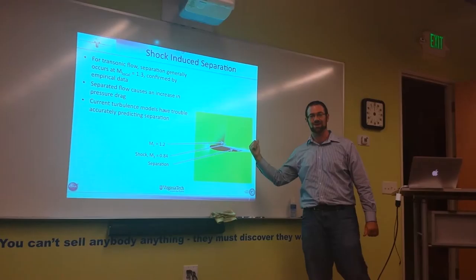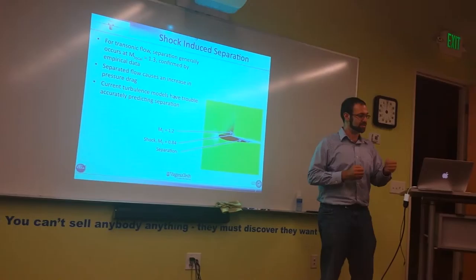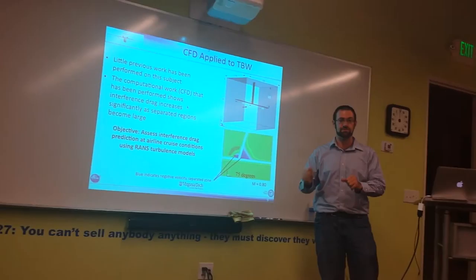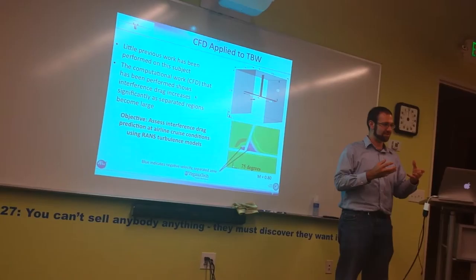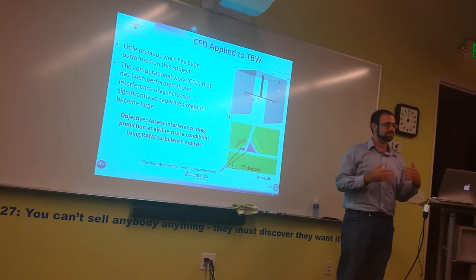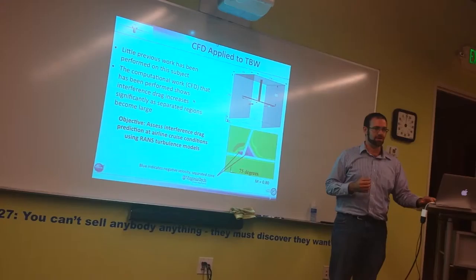The current turbulence models have a lot of trouble predicting this phenomenon in particular, so they need a good assessment. That is what our objective is. Our objective is to look at how computational models can be applied to this TBW concept. And there's been little previous research. And that which has been done shows that interference drag increases significantly in this region where there are two trusses or struts rather than any other region of the aircraft. The objective is to assess interference drag prediction at airline cruise speeds using RANS turbulence models. RANS turbulence models are specific to the industry. I'll take questions on that at the end of the presentation.